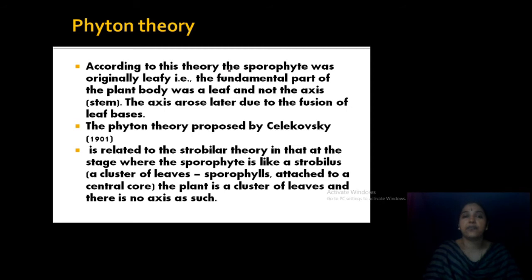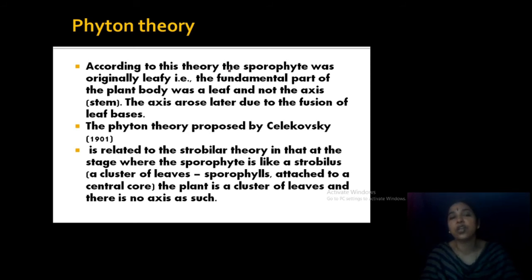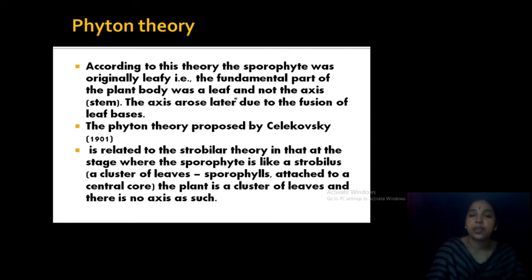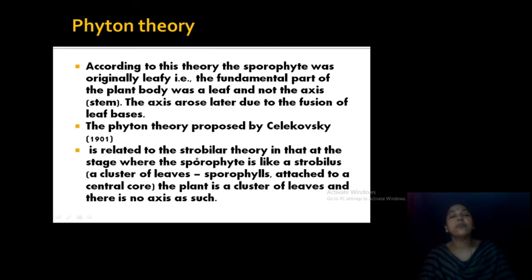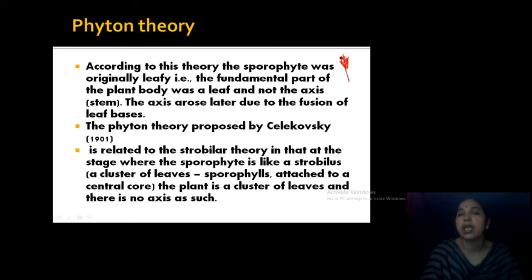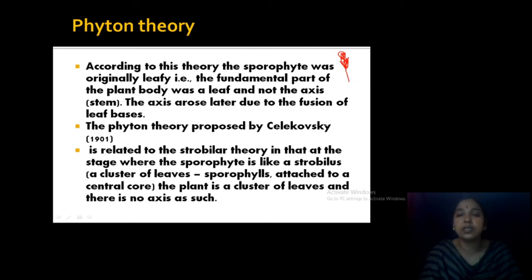The next theory is the Phyton theory, proposed by Selikovsky in 1901. According to this theory, the fundamental part of the plant body was the leaf and axis system, with the axis arising by fusion of the leaf bases. At the stage where the sporophyte is like a strobile — a cluster of leaves — the sporophyte is attached to a sterile core with no axis as such. From this clustered number of leaves, branches developed and they became the higher pteridophytes. However, this is not an accepted theory.